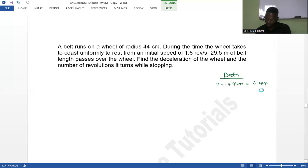During the time the wheel takes to coast uniformly to rest, meaning the final angular velocity is zero revolutions per second. The initial angular velocity is 1.6 revolutions per second. And I've been given also the length, which I can take as my arc length, which is 29.5 meters.